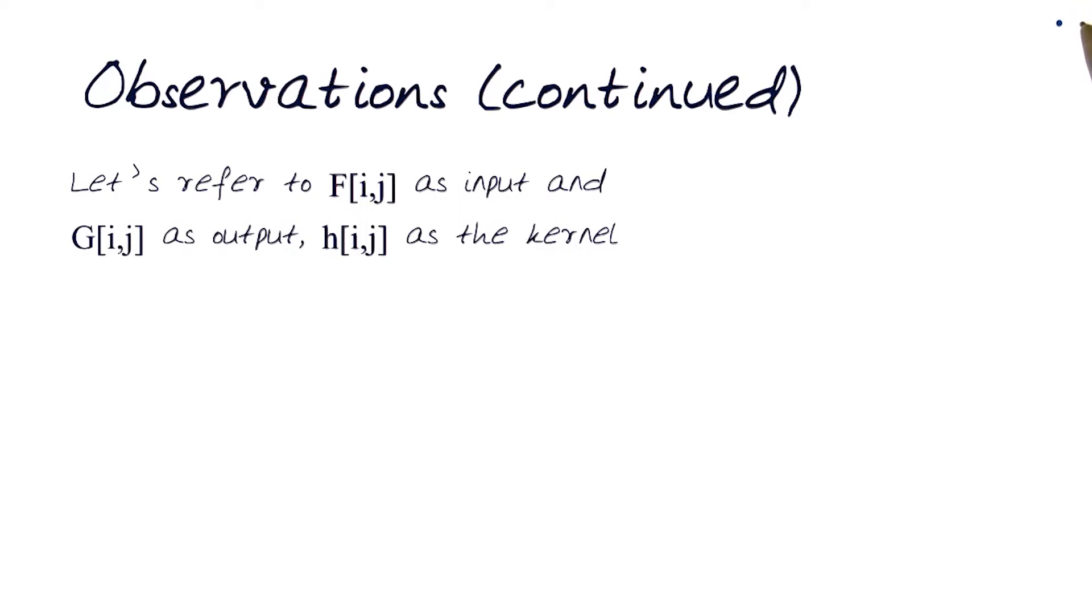To help us generalize this, now let's refer to an input image as f index over i and j, output as g, and h[i,j] as the kernel. And these are the terms we will be using again and again throughout some of the stuff we deal with in image processing.